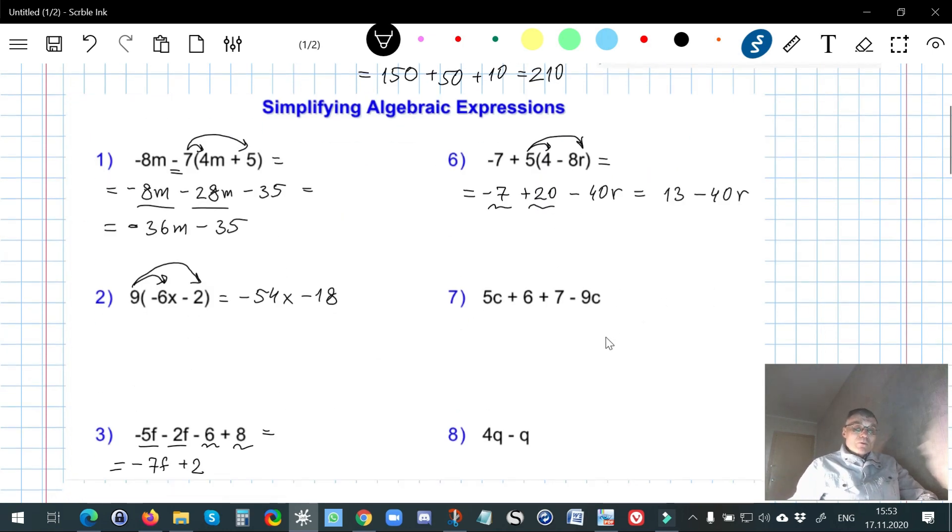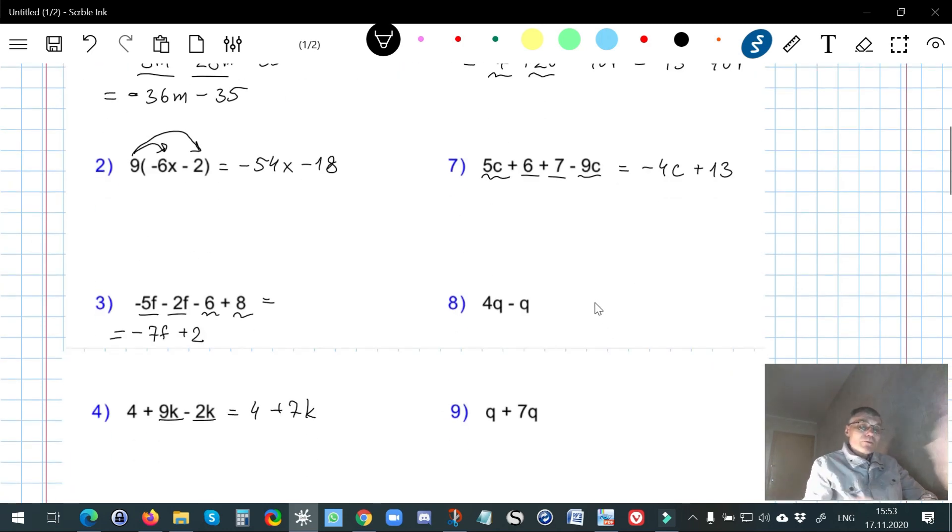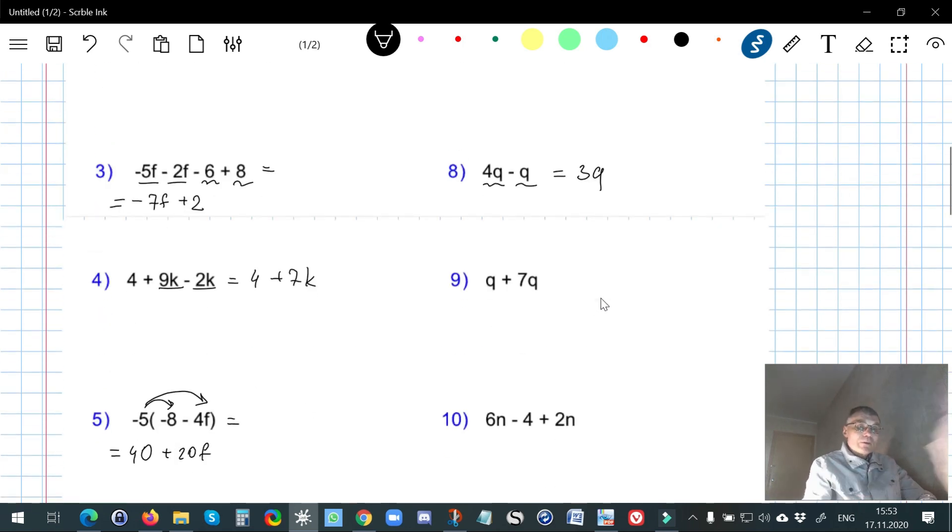In number 7 we don't have to distribute anything, but we have like terms. Here positive 5 plus negative 9 gives me negative 4, mustn't forget about c. And positive 6 and positive 7 give me together positive 13. Here I don't have to distribute anything, just combine the like terms. Positive 4 plus negative 1 gives me positive 3 and 3q. In here same, just positive 7 plus positive 1 is 8q.